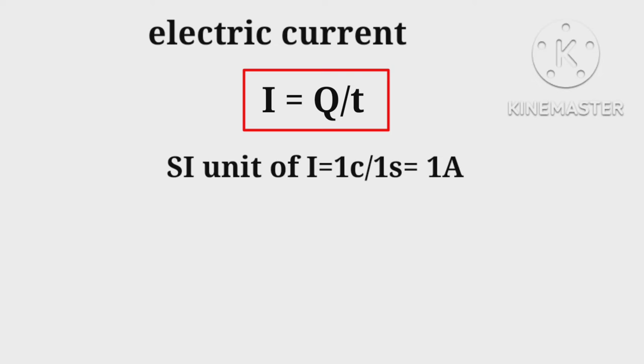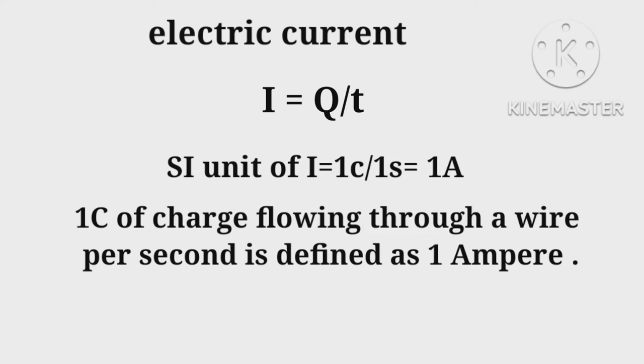SI unit of current: 1 coulomb per 1 second = 1 ampere. Therefore, one coulomb of charge flowing through a wire in one second can be defined as one ampere. For example, if 5 coulombs of charge flows through a wire in 2 seconds, then...